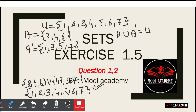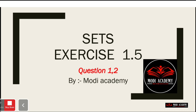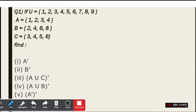Now we will look at various types — complement of a set, A minus B, and then complement, and many different questions. We are moving ahead to Question 1 of Exercise 1.5, Sets chapter. The universal set is natural numbers less than or equal to 9, which means {1, 2, 3, 4, 5, 6, 7, 8, 9}.